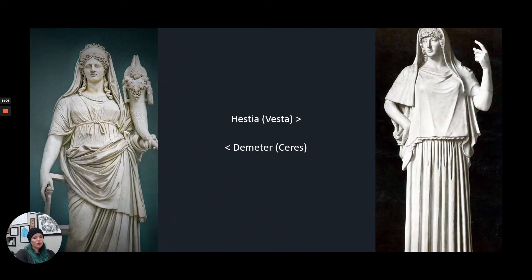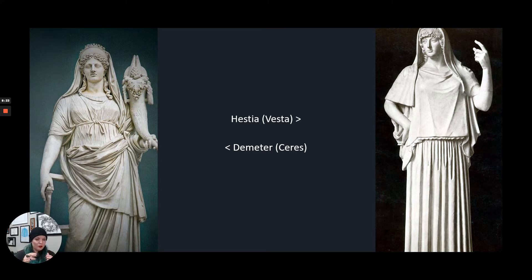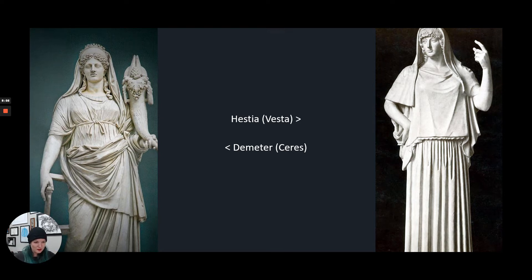Then we have Hestia, whose Roman name is Vesta, and Demeter, whose Roman name is Ceres. Hestia is the sister of Hera, Poseidon, Zeus, and their other brother Hades. She is the goddess of the hearth. When archaeologists are digging up different sites and looking at Roman homes, called domos, under the hearthstone they often find little statues of a woman — that's Hestia, because having her statue there was believed to bring good fortune and protect the house. She is really easy to mistake for Hera since neither has consistent attributes.